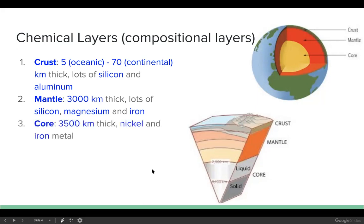The third layer based on chemicals is called the core. This is the biggest layer, it's 3500 kilometers thick and it's also made of heavy metals, specifically nickel and iron metal. The main takeaway is that lighter elements are at the surface and heavier elements are towards the center, the core.